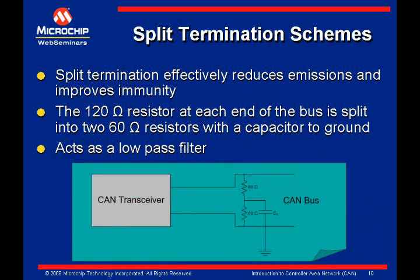Termination of an ISO 11898-2 bus consists of two 120 ohm resistors, one placed at each end of the bus to eliminate reflections. Splitting those single 120 ohm resistors into two 60 ohm resistors and installing a capacitor to ground between the two will create filtering at each end of the bus. Like the other filters discussed, this scheme does not provide any voltage clamping, only filtering.